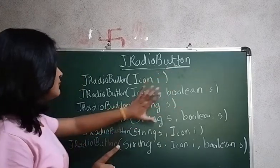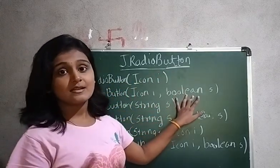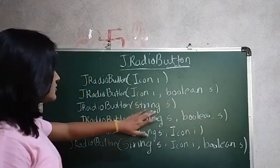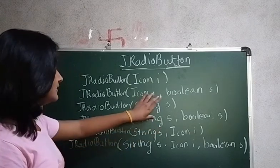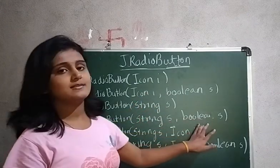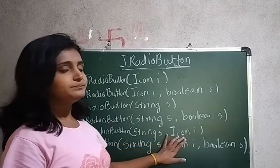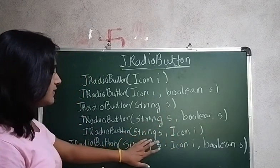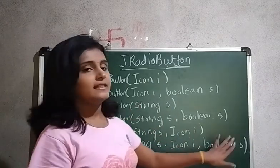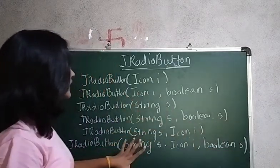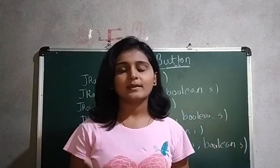You can pass the icon and its default status. You can pass the string label — for example male, female, or any option — along with a boolean status. You can also pass both a string and an icon, or pass the string, icon, and boolean status together. These are the constructors available for JRadioButton.